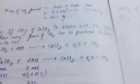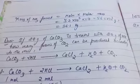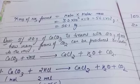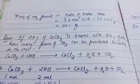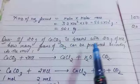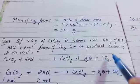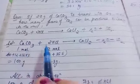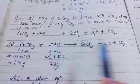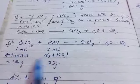Now the second question: if 20 grams of calcium carbonate (CaCO₃) is treated with 20 grams of HCl, how many grams of CO₂ can be produced? The reaction is: CaCO₃ + 2HCl → CaCl₂ + H₂O + CO₂. So one mole of CaCO₃ reacts with two moles of HCl to give one mole of CO₂. First, calculate the molar masses.